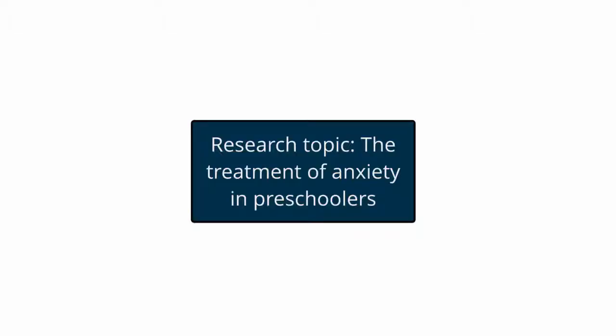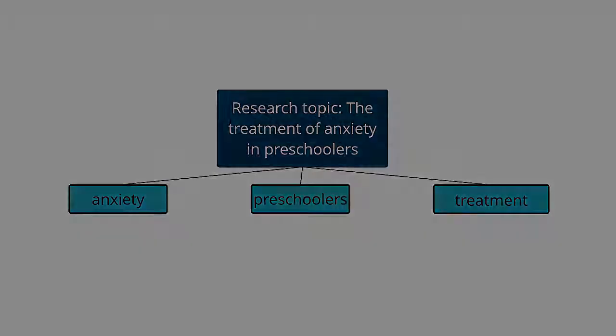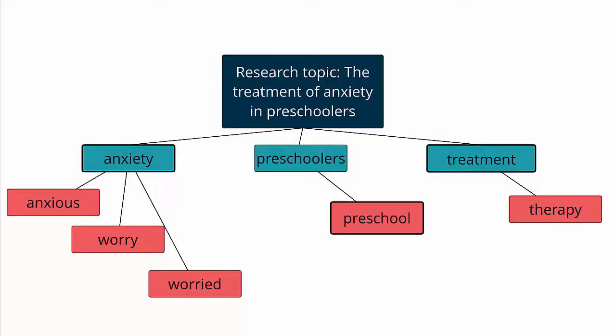To get from a research topic to keywords, start by identifying the major concepts of your research topic. There's no magic number of concepts — just look for the major ideas. You'll notice that in this example, I ended up with three major concepts. Once I have my concepts, I want to think about alternate terminology for each concept, since not every author uses the same words that I do to describe my topic.